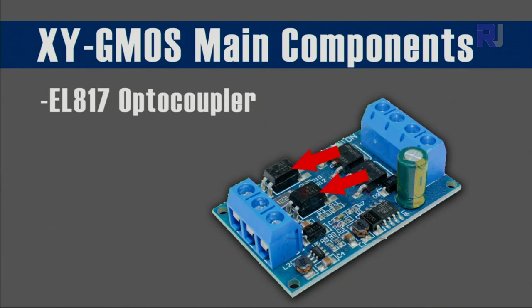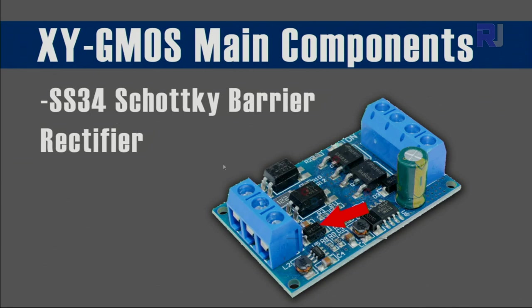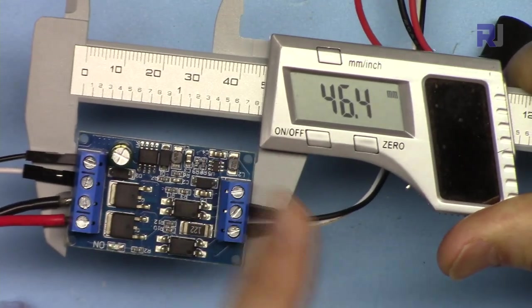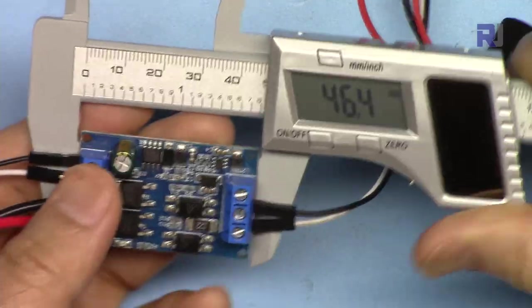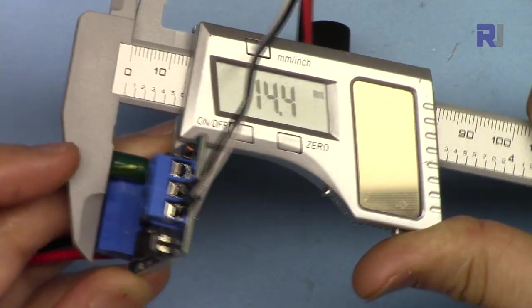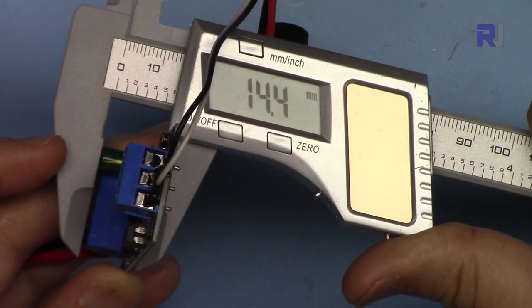Then we have SS34, a Schottky barrier rectifier, and SS110 Schottky rectifier. Length of the module is 46.4 millimeters by 29.3 millimeters by 14.4 millimeters.